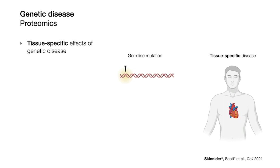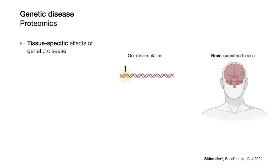In my PhD thesis, I used proteomics to tackle an interesting puzzle in genetic disease, which is that inherited mutations — present in virtually every cell in the body — often cause dysfunction in just a single tissue. For example, in Huntington's disease, the mutated Huntington protein is actually expressed at high levels in the heart, liver, and lungs, in addition to the brain.